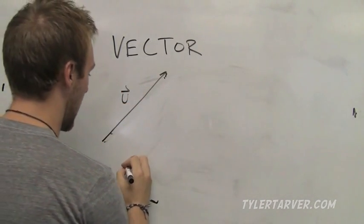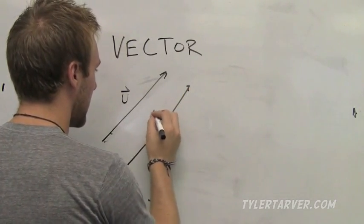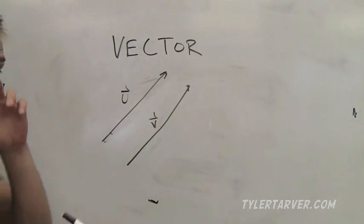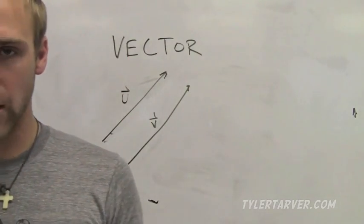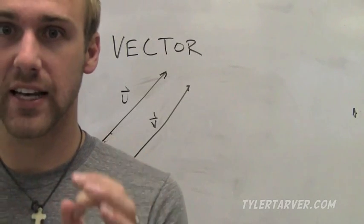And right there is vector v. They would have to have the exact same magnitude, which is the same distance, and they have to have the exact same direction. Make sense? That's called equal vectors. To be exactly equal they have to have both of those things.